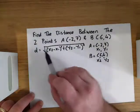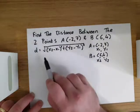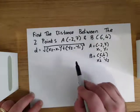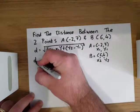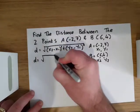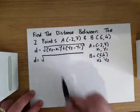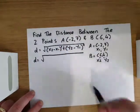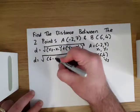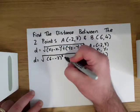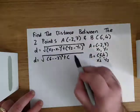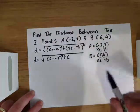Now we have everything we need to do this formula. We have x2, x1, y2, and y1. So d, the distance, equals the square root of x2 minus x1, which is 6 minus -2 squared, plus y2 minus y1, which is 4 minus 7, again squared.